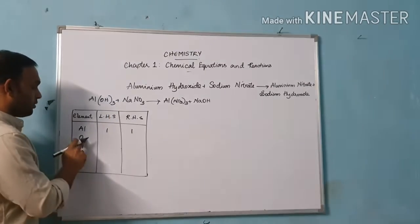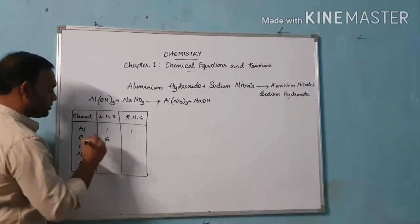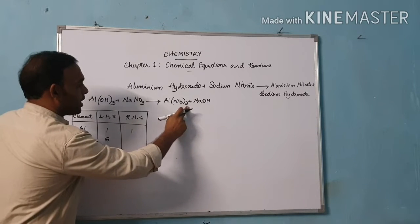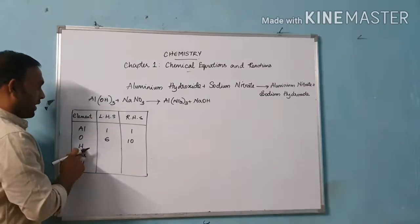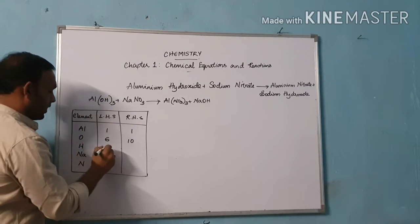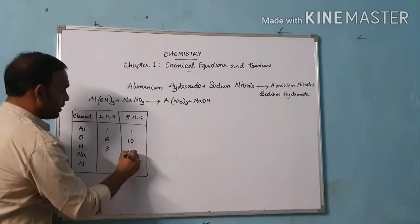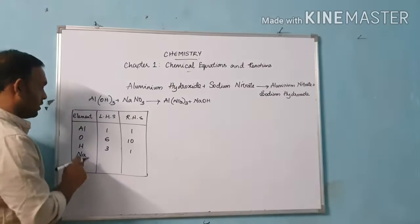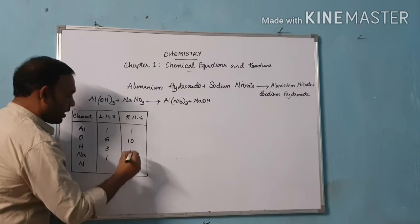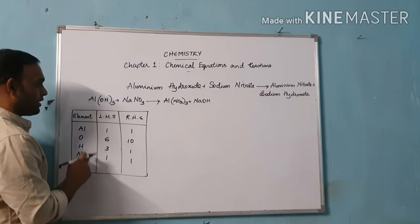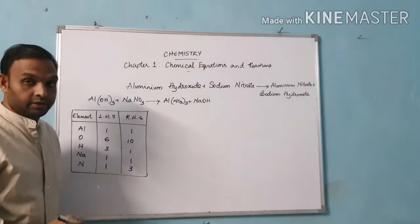In the tabulation: aluminium — 1 on LHS and 1 on RHS. Oxygen — 3 plus 3 gives 6 on LHS, and 9 plus 1 gives 10 on RHS. Hydrogen — 3 on LHS and 1 on RHS. Sodium — 1 on LHS and 1 on RHS. Nitrogen — 1 on LHS and 3 on RHS.